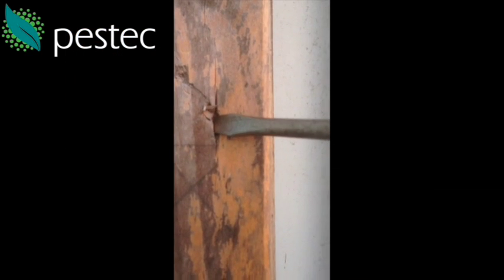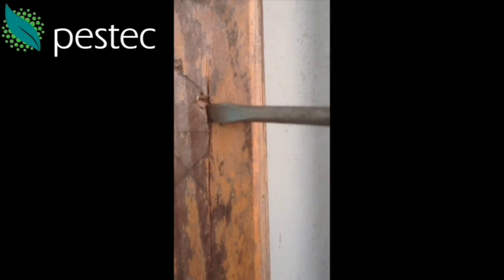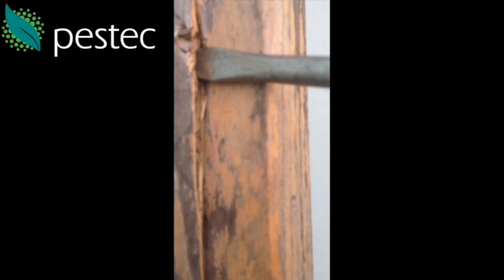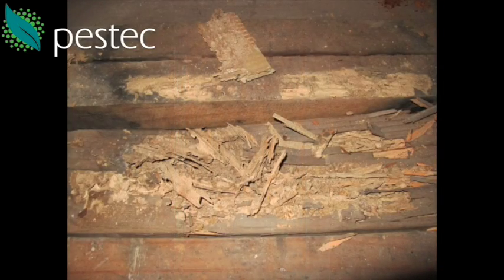Often when you find termites, they're going to be inside a piece of timber like this, where I'm prising apart a piece of timber that has been attacked over a long period of time by termites. When you look in there — it's poor footage just taken with an iPhone — but up close in there are thousands of termites. Sometimes you'll find a piece of timber that's been reduced to looking like this, where the timber itself has become so fragile that it just crumbles.